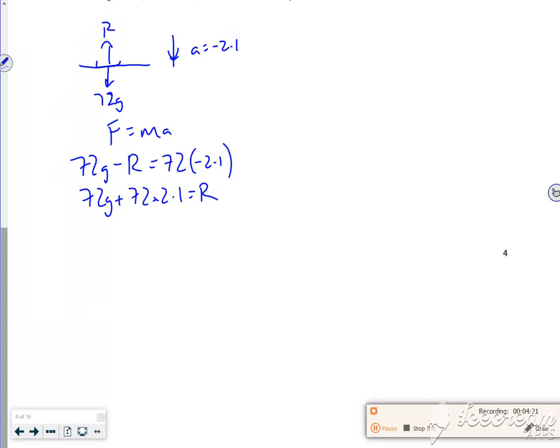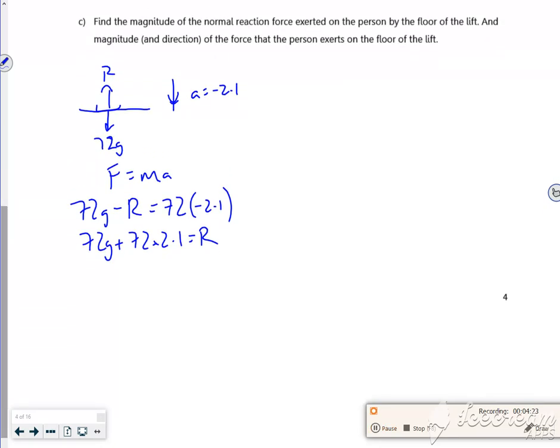Right, so I did F equals ma for that specific diagram. It gives me an R value of roughly 900 newtons to 1 sig fig. So the person is exerting 900 newtons on the lift floor. It's going down. That's what it's asking about - the magnitude is 900 newtons.